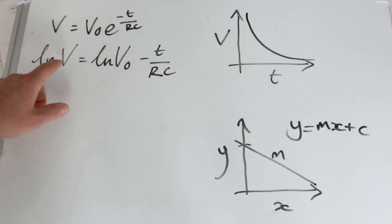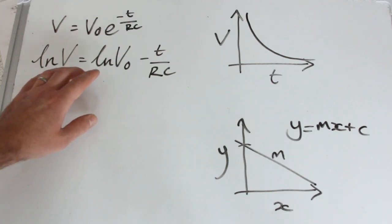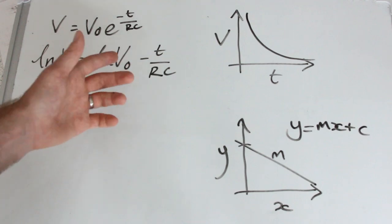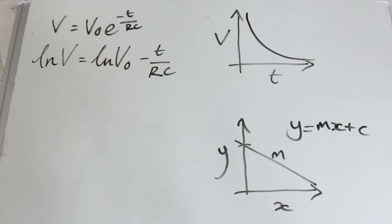Okay, they could be I and I0, so current is proportional to voltage, or it could be charge, so it could be Q and Q0. Okay, the maths is exactly the same.